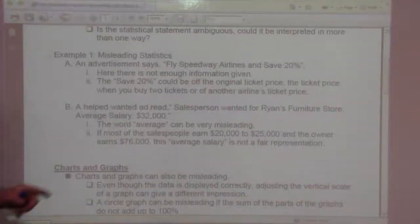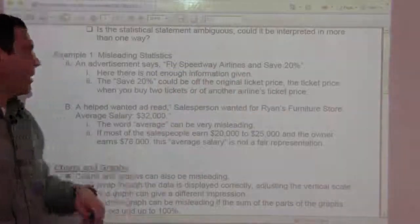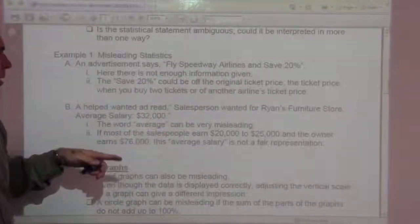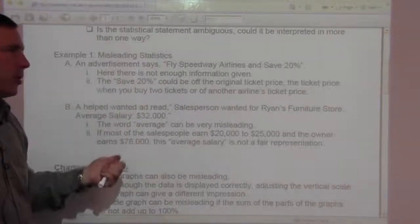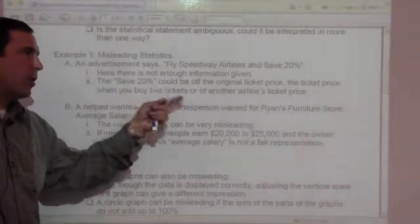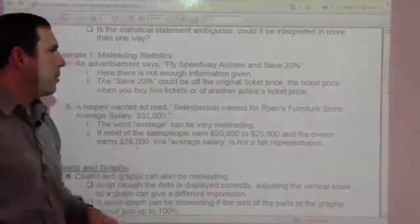Example 1: Misleading statistics. An advertising statement says, fly Speedway Airlines and save 20%. Here there's not enough information given. The save 20% could be off the original ticket price, the ticket price when you buy two tickets, or of another airline's ticket price. You don't know, so that's not enough information.